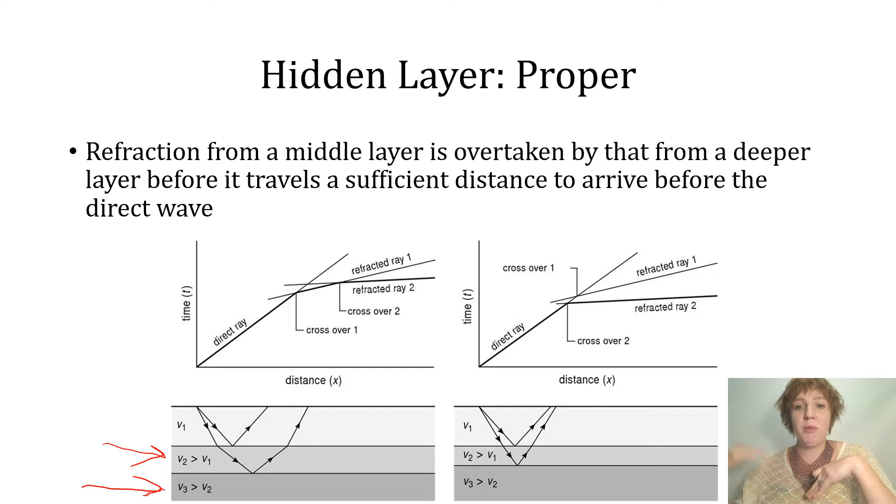In the case of a hidden layer, that energy that traveled along the boundary between layer one and layer two, while it does eventually arrive earlier than the direct wave, there's another layer below it that beats it to that.